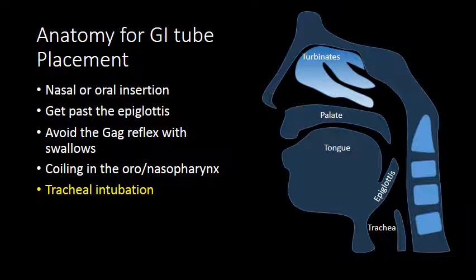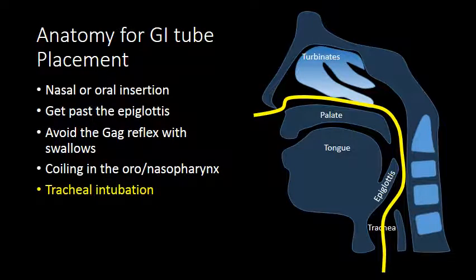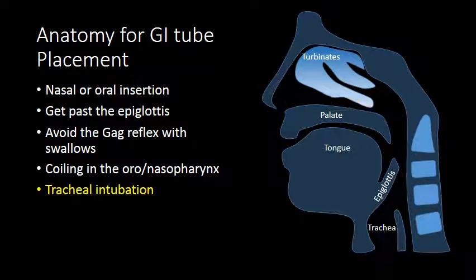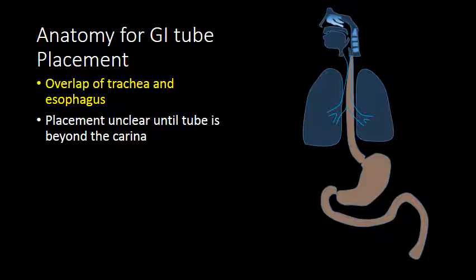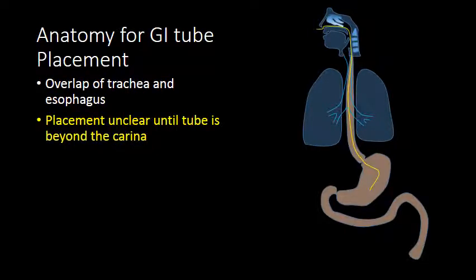The worst thing to happen when placing a GI tube is tracheal intubation. One difficulty in distinguishing tracheal versus esophageal intubation on an initial radiograph is that the trachea and the esophagus overlap for a considerable portion of their course. Until the tube has been passed beyond the carina, it is difficult to discern where the catheter is located. When the catheter does pass beyond the carina, we can be confident of its location within the esophagus.